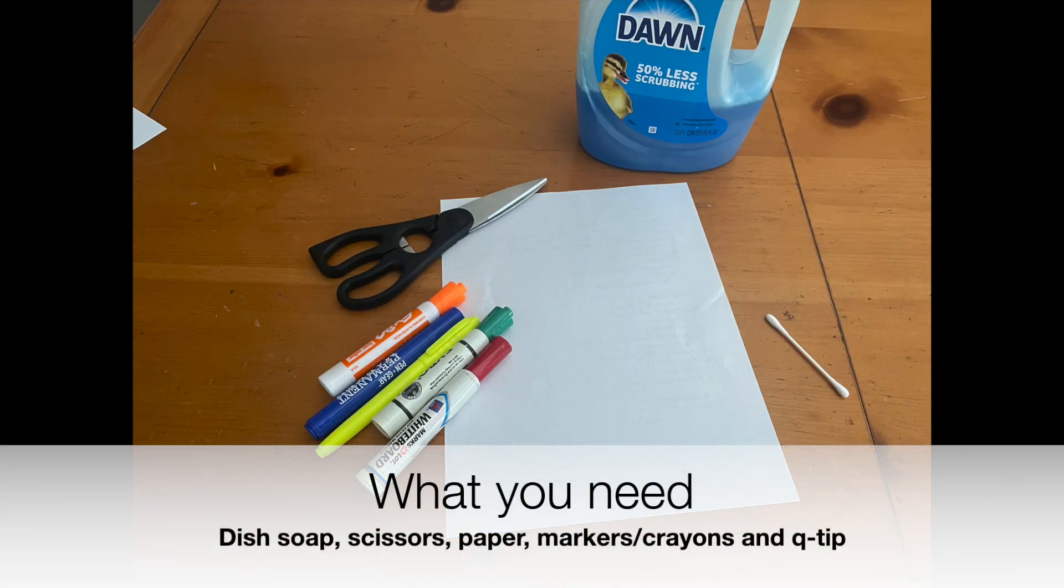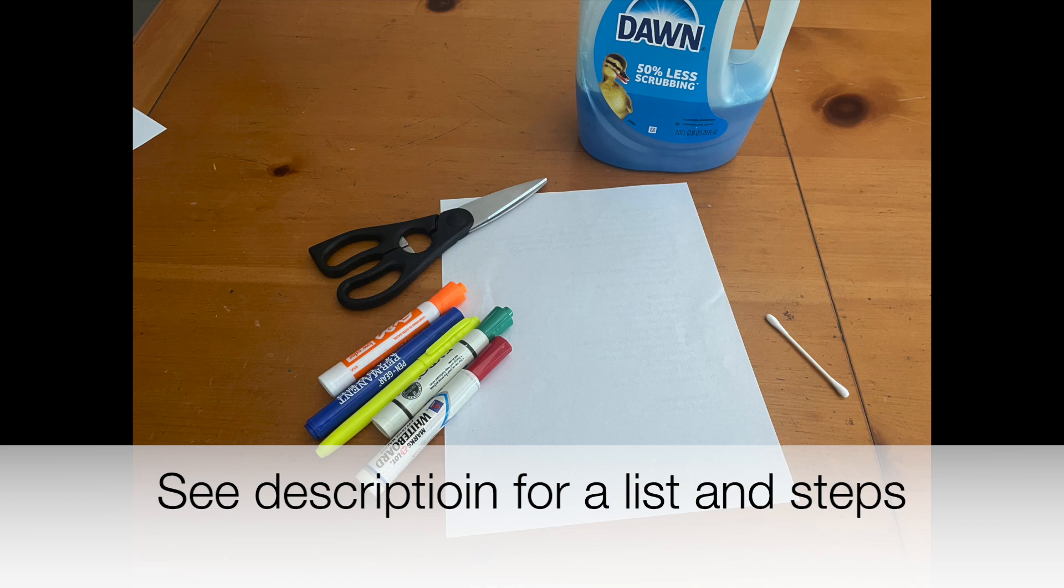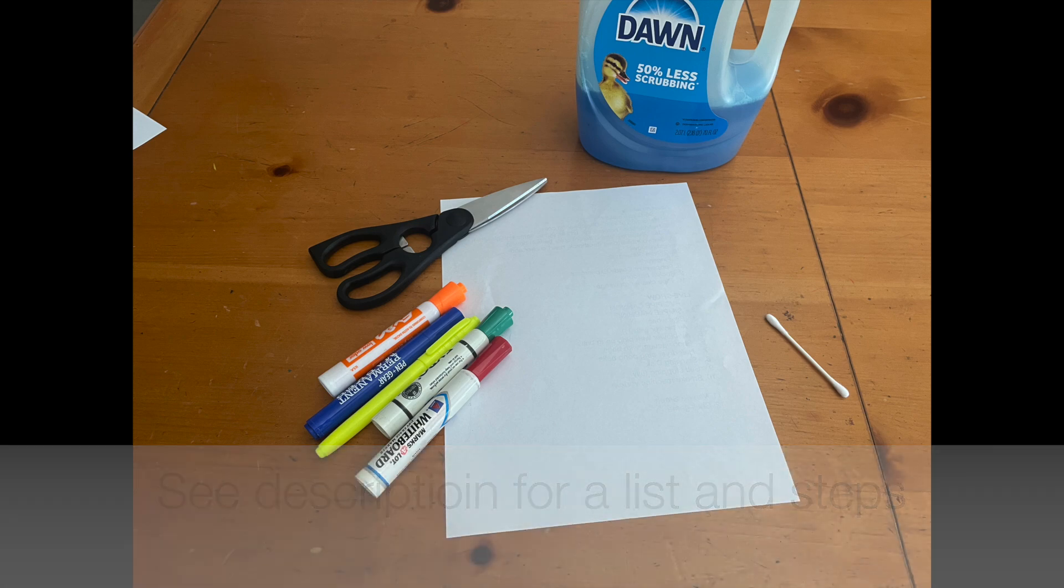What you need for this experiment is dish soap (I use Dawn), scissors, paper, markers or crayons, and a q-tip. If you look in the description, there will be a list of all the supplies you need and the science behind it.